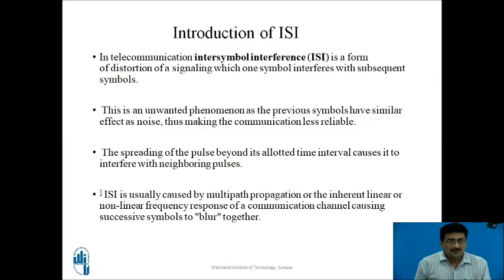So here, briefly what we can say that in telecommunication inter-symbol interference is a form of distortion of signaling, which one symbol interferes with the subsequent symbols. This is an unwanted phenomenon as the previous symbols have similar effects as noise, thus making the communication less reliable. This is undesired thing. The spreading of the pulse beyond its allotted time interval causes it to interfere with neighboring pulses. And ISI is usually caused by multipath propagation or the inherent linear or non-linear frequency response of a communication channel causing successive symbols to blur together.